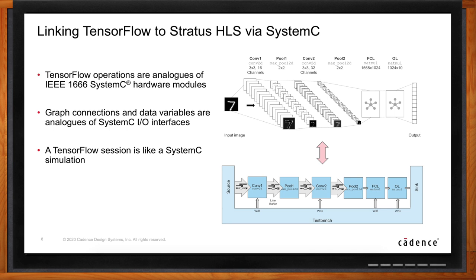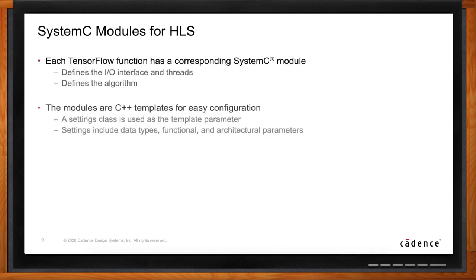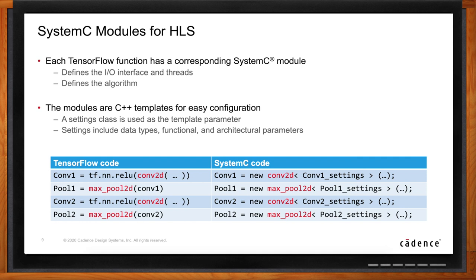Can you show how this mapping works? This example shows TensorFlow code alongside the corresponding SystemC code. In TensorFlow there are functions like conv2d or max_pool_2d, and in SystemC there is a module with the same name that defines the IO interface, threads, and the algorithm. The conv2d module in SystemC implements the conv2d function exactly as it is done in TensorFlow. The modules are written as C++ templates — just like TensorFlow functions take parameters, you want these modules parameterized for different data types, functional parameters, and architectural parameters.